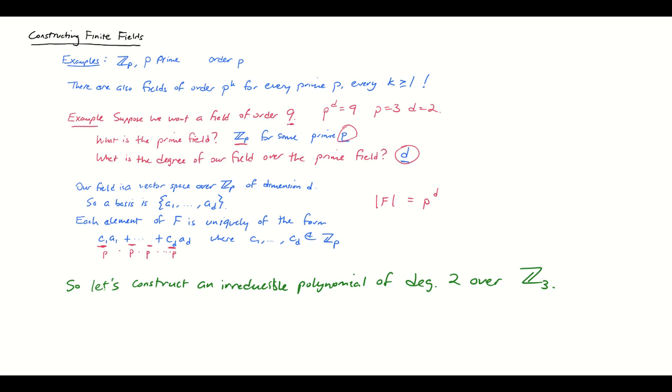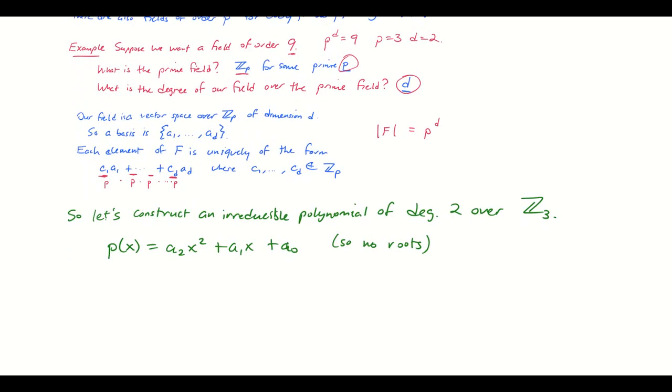Now the good news here is if I can just set up my polynomial p of x, let's call it a2 x squared plus a1 x plus a0, if I could just construct this so it has no roots, that would be enough because I have degree 2. If this polynomial factored, it would factor into two linear polynomials, which would mean it had roots. So if I can just get one of these to have no roots, then I win.